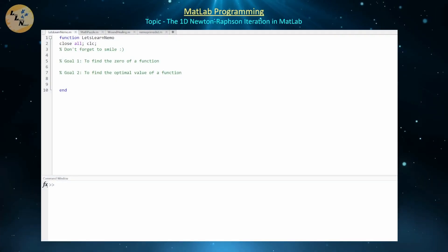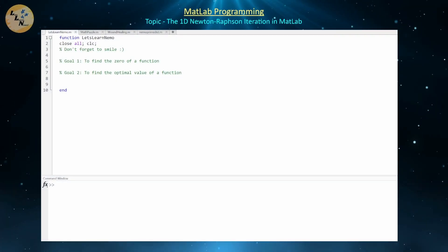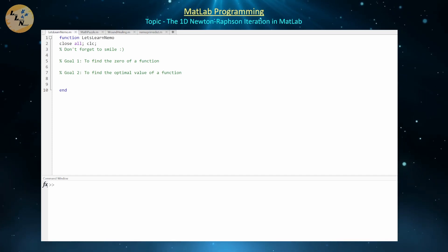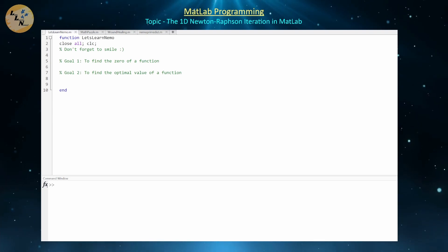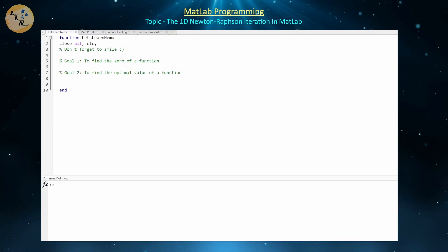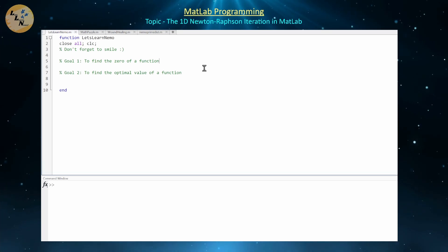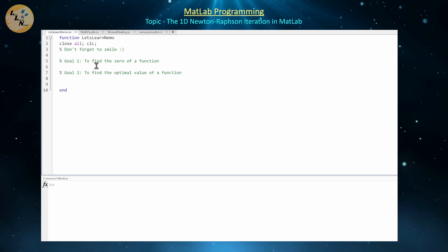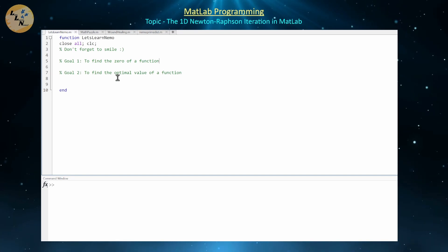Hello everyone and welcome back. Today we're going to continue our exploration of the MATLAB programming language and focus on the implementation of the one-dimensional Newton-Raphson iteration method. We're going to be doing the Newton-Raphson iteration for two different but closely related problems: finding the zero of a particular function numerically, and finding the optimal value of a particular function.